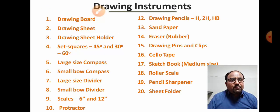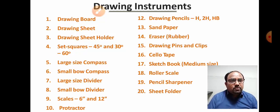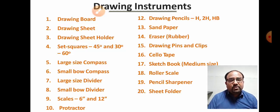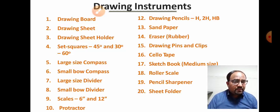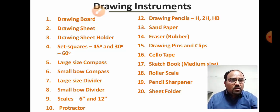Different types of drawing instruments are used in engineering graphics: drawing board, drawing sheet, drawing sheet holder, set square (two types: 45-degree and 30-to-60-degree), compass, protractor, drawing pencil, eraser, pencil sharpener, sheet folder, and sketch book.